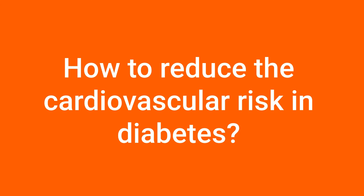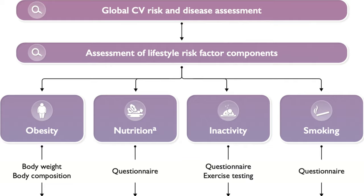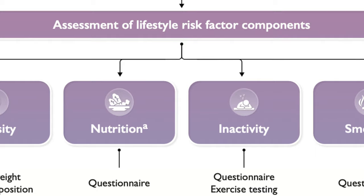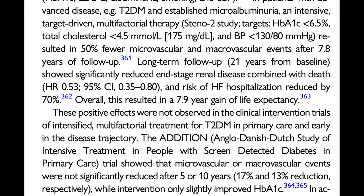To reduce cardiovascular risk, we need an integrated approach that combines lifestyle modification with medications. This integrated approach targeting hemoglobin A1c, cholesterol, and blood pressure can lower microvascular and macrovascular events in some studies by 50%, gaining more than 7 years of life expectancy. However, these results were not reproducible in all studies.